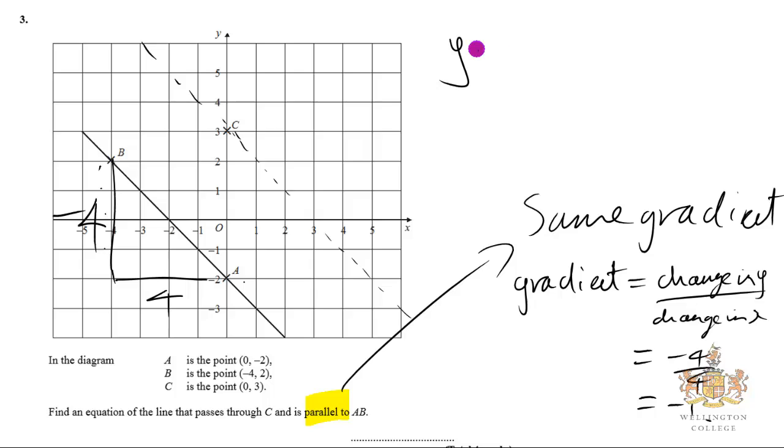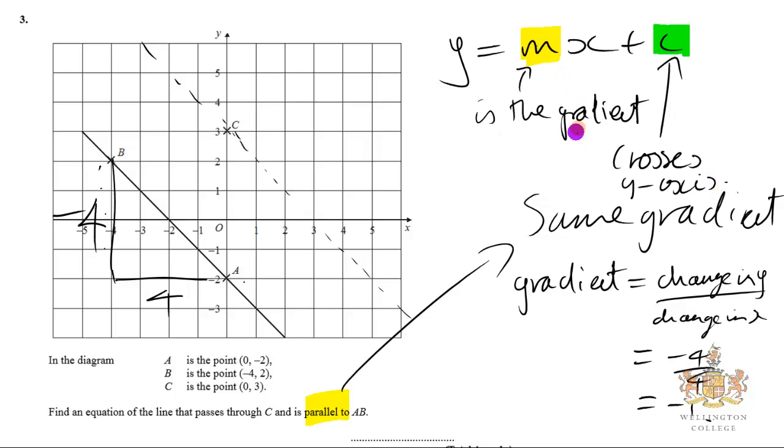Remember the equation of a straight line is Y equals MX plus C. M is the gradient, and C is where it crosses the Y axis.